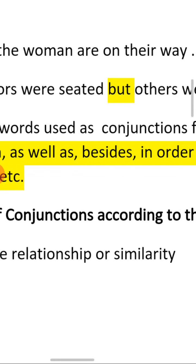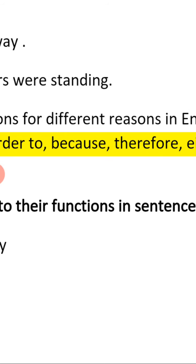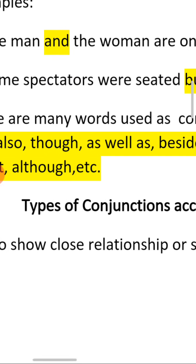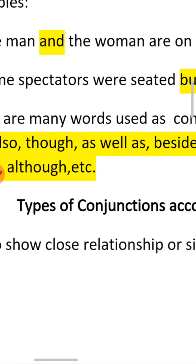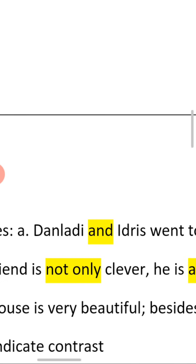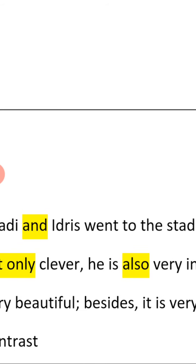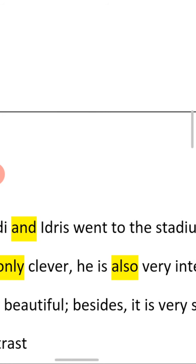Conjunctions are used in sentences according to the functions they perform. First, we have conjunctions used to show relationship or similarity between words or groups of words. For example: 'Danladi and Idris went to the stadium.' The conjunction 'and' is used to link Danladi and Idris together in the sentence, showing the relationship that they both went there.